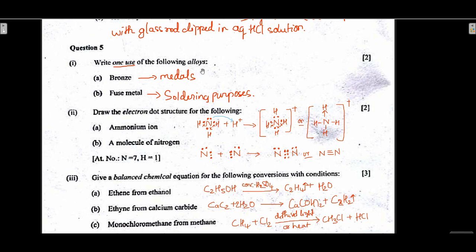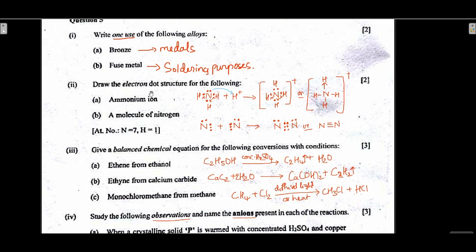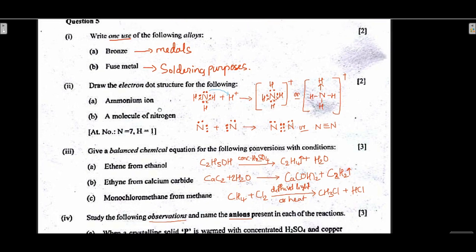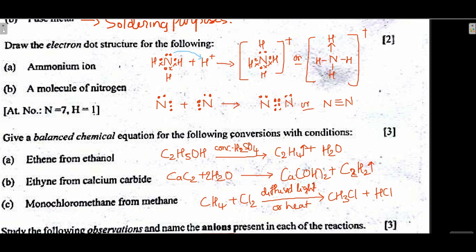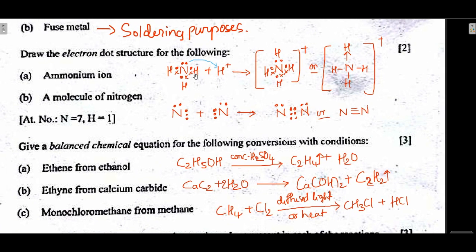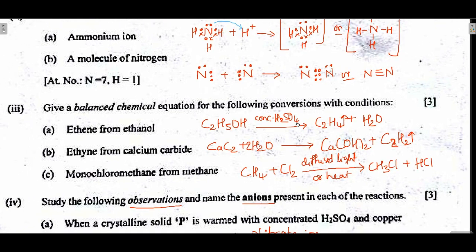One use of the following alloys: bronze is used to make medals or statues; fused metal is used for soldering purposes. Draw electron dot structures: ammonium ion — first draw ammonia with its lone pair, add H+, the lone pair is donated to H+ forming a coordinate bond, then show bond-line notation with positive charge. Nitrogen molecule: nitrogen has five valence electrons, two nitrogens share three pairs forming a triple bond with one lone pair on each nitrogen.